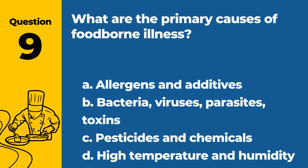Question 9. What are the primary causes of foodborne illness? a. Allergens and additives. b. Bacteria, viruses, parasites, toxins. c. Pesticides and chemicals. d. High temperature and humidity. Answer: b. Bacteria, viruses, parasites, toxins. These are the primary causes of foodborne illness.